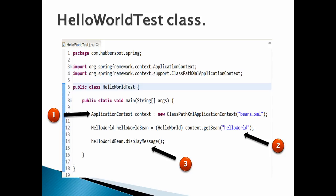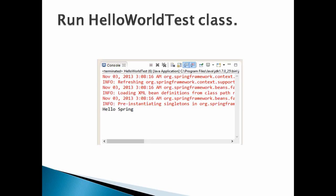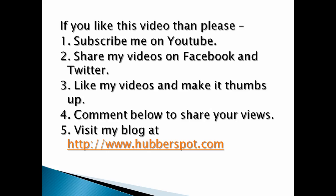In the configuration file we provided the message value as 'Hello Spring', so upon running the program it prints 'Hello Spring' on the console. Go through this video two to three times so that the Spring Hello World example becomes clearer. Hope you liked this video — please take a minute to like, share, comment, or subscribe to my channel, or visit my website at www.hubberspot.com.